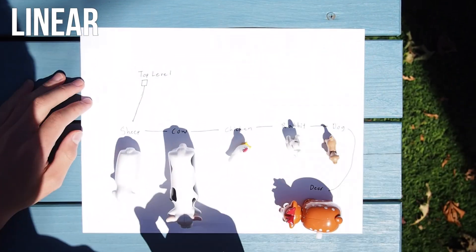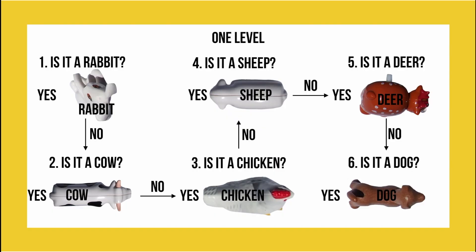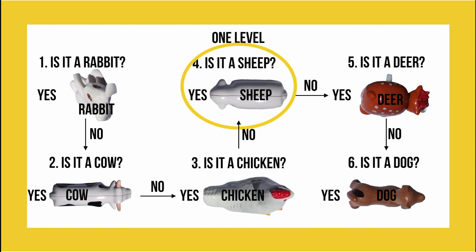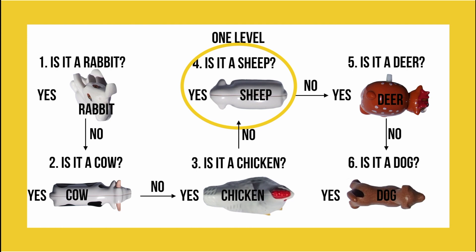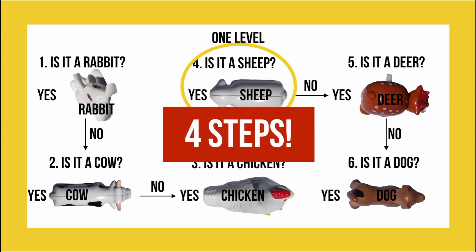Now let's see how easy it is to use. Say that you wanted to find the sheep. We start by asking if it is a rabbit — the answer is no. So then we move on to asking: is it a cow? Also no. So then we move on to question three: is it a chicken? No again. Finally at question four we see that it is a sheep. This process takes four steps as we have to ask four questions along the way.